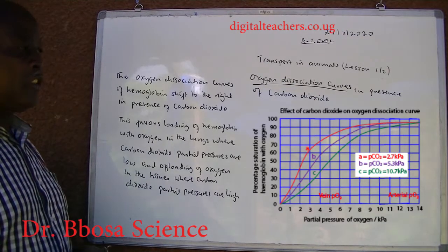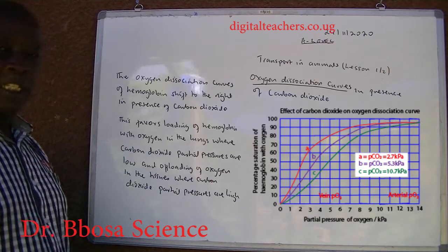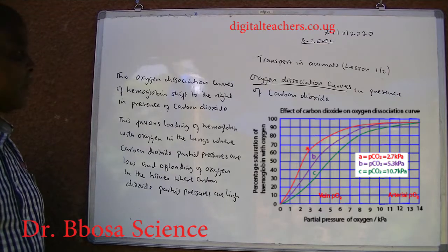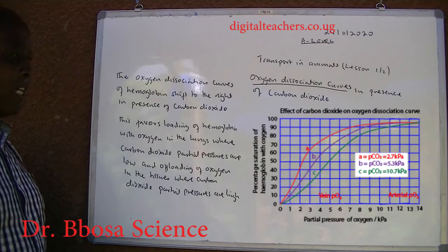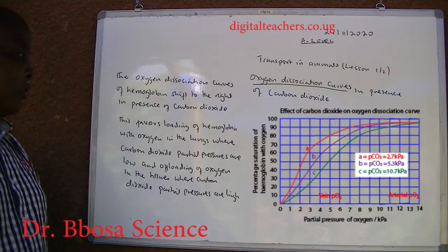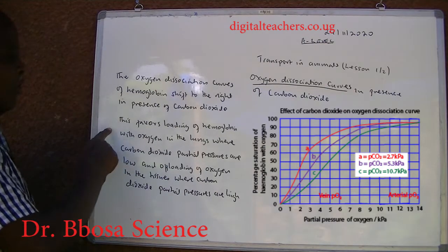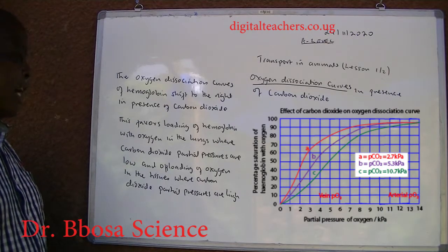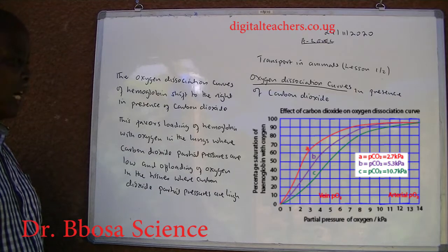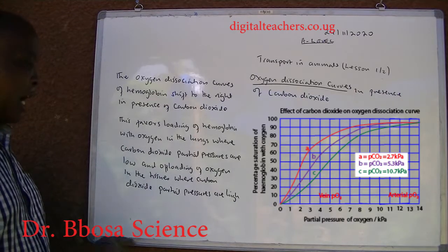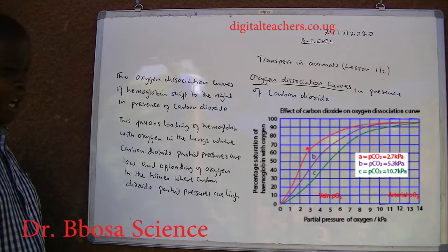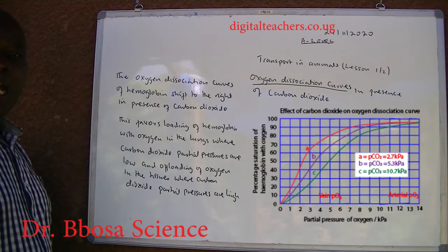Oxygen dissociation curves in the presence of carbon dioxide: the oxygen dissociation curve of hemoglobin shifts to the right in the presence of carbon dioxide. This favors loading of hemoglobin with oxygen in the lungs where carbon dioxide partial pressures are low, and off-loading of oxygen in the tissues where carbon dioxide partial pressures are high.